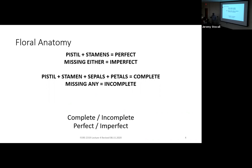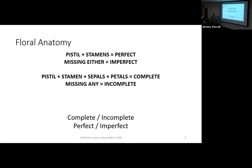We have the female part of the plant, the pistil, and the male part of the plant, the stamen. If a flower has both a pistil and a stamen, it's both male and female — the term for that is perfect. That's a perfect flower; it has both sexes. If it's missing either the pistil or the stamen, then it's a unisexual flower. The term for that is imperfect, so you would have either an imperfect male flower or an imperfect female flower.